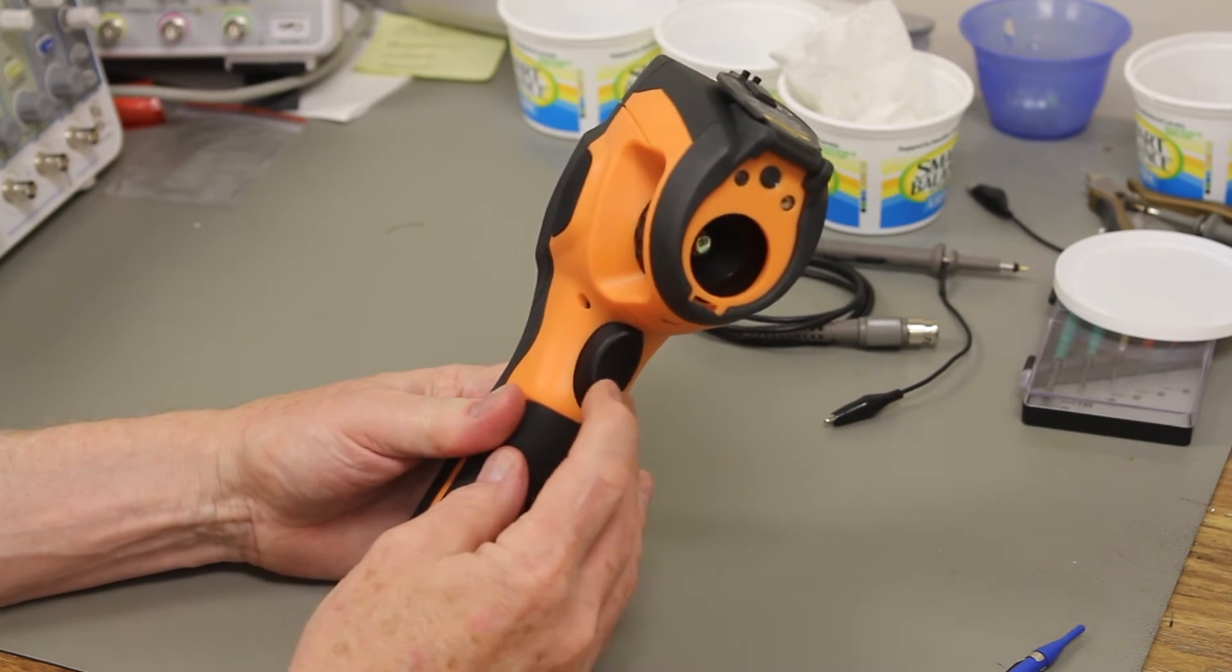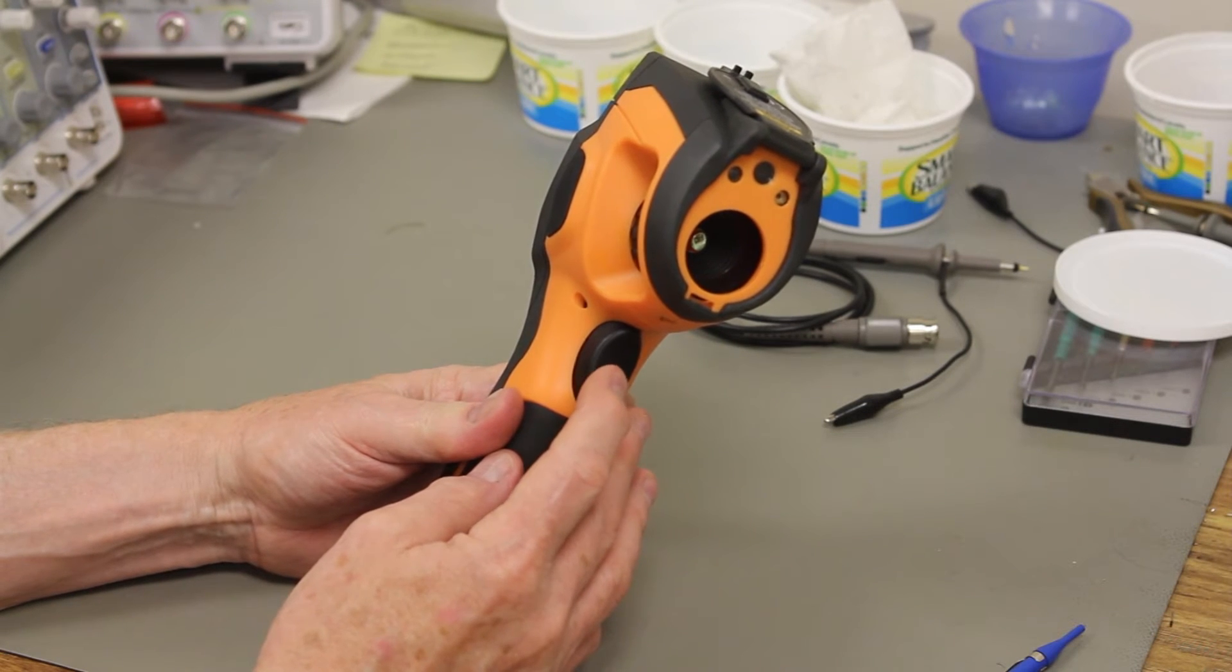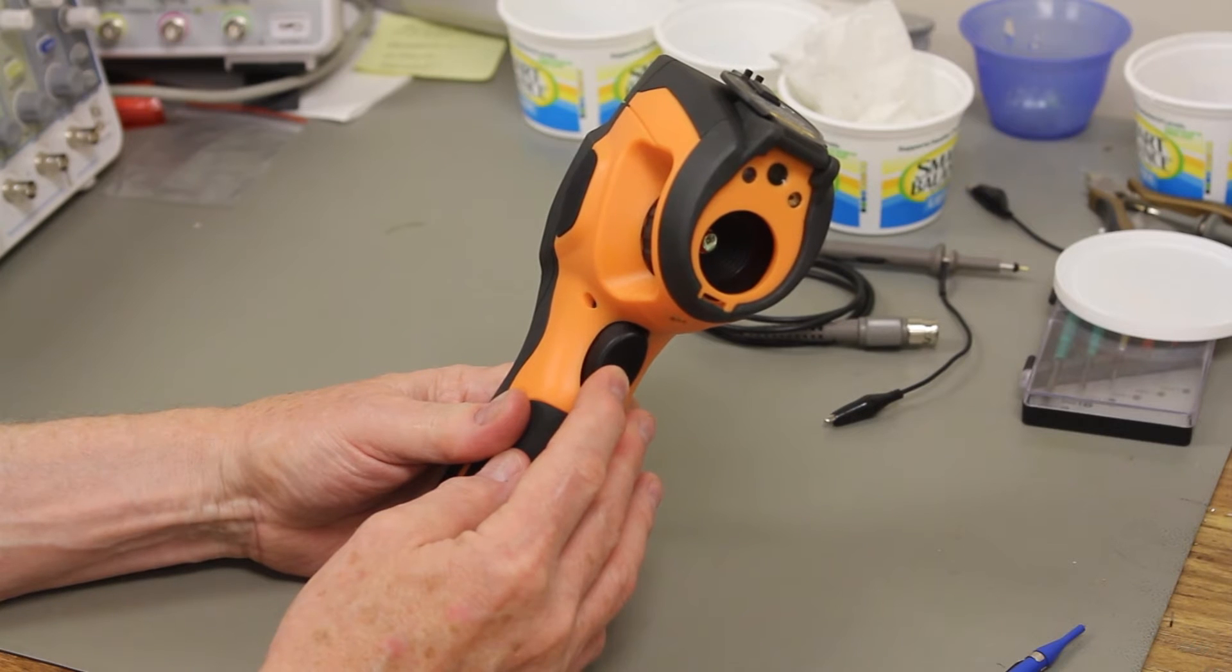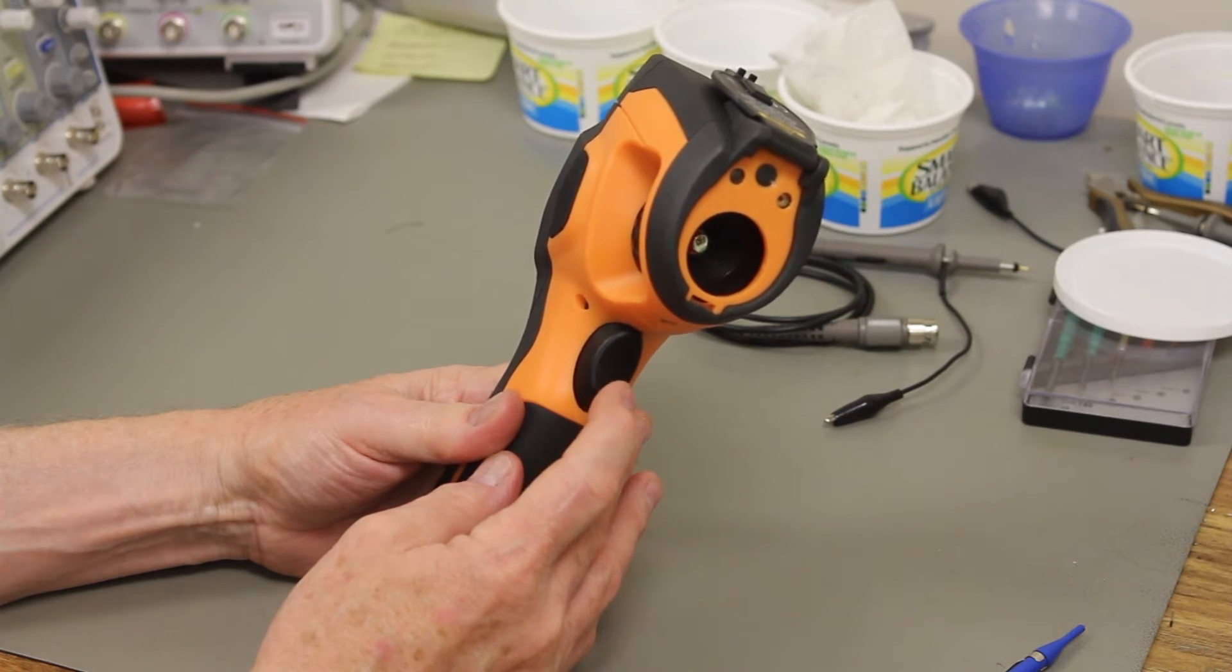The trigger just underneath here can be used in two different ways. Just pressing it for just a second you can take a still photo. If you hold it down for several seconds you'll initiate a movie. So that's how you can use that. Pressing again will stop the movie.